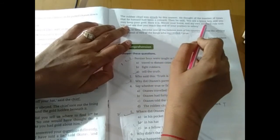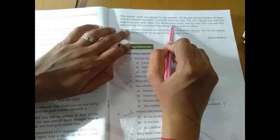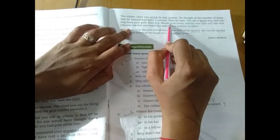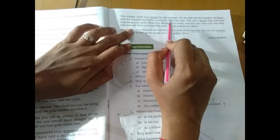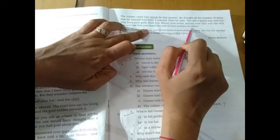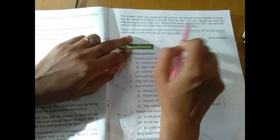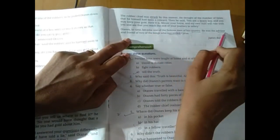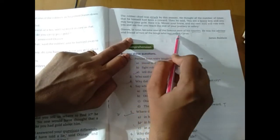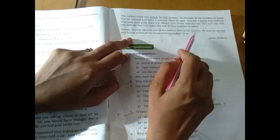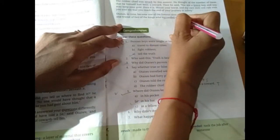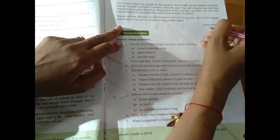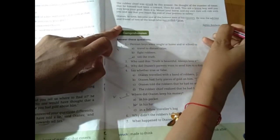The robber's chief was struck by this answer. Then he said, you are a brave boy, and you will keep your gold. Here it is. Mount your horse and my own man will ride with you and see that you reach the end of your journey, safely.